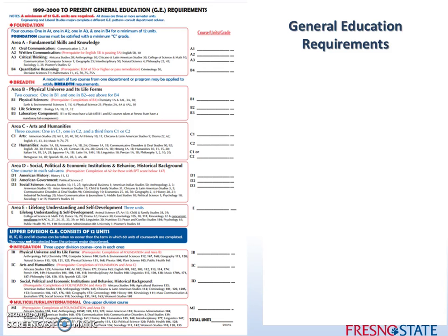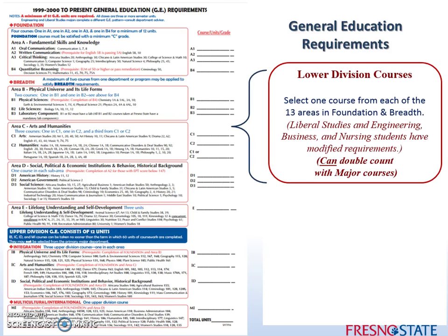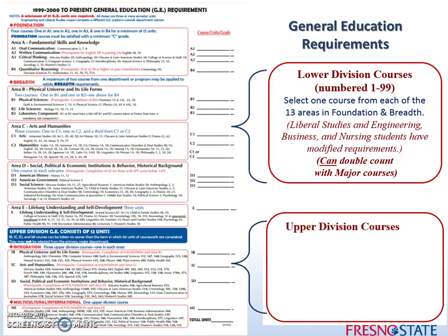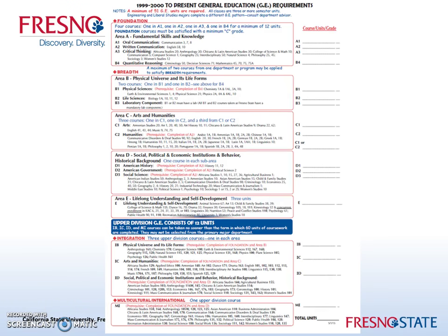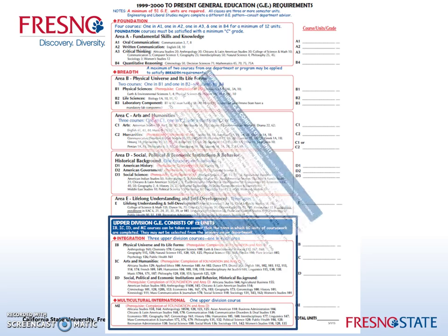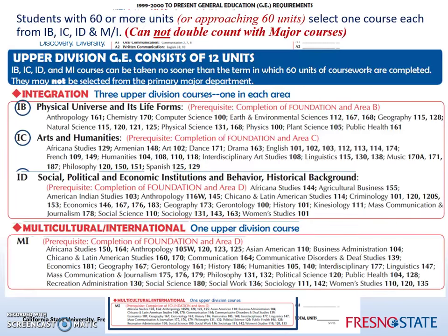Let's get started with a brief review of your general education requirements. Lower division courses are numbered 1 through 99 and can double count with major courses, while your upper division courses are numbered 100 through 199. Your upper division GE consists of 12 units from the following areas: IB, IC, ID, and MI.